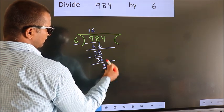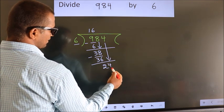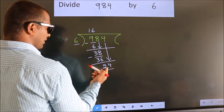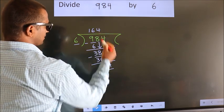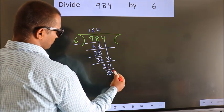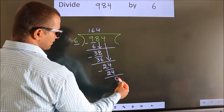After this, bring down the beside number. So 4 down. So 24. When do we get 24? In 6 table. 6 times 4 is 24. Now we subtract. We get 0.